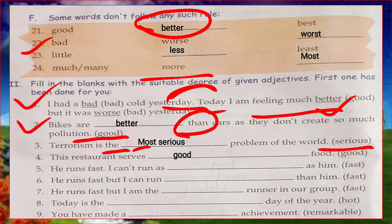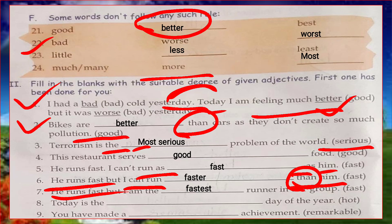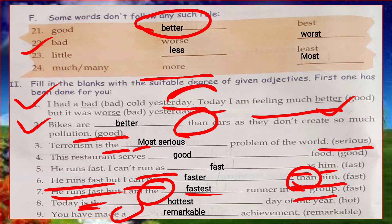'He runs fast but I can't run as fast as him' — positive degree used here. 'He runs faster' and 'I'm the fastest runner in the group' — 'the' is present so superlative degree 'fastest' is used. 'Today is the hottest day' — 'the' is coming, so superlative of 'hot' is 'hottest.' 'You have made a remarkable achievement' — 'a' is coming, so it's positive degree.